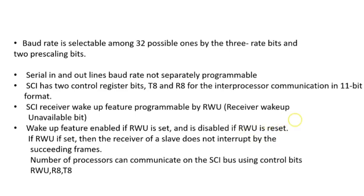The baud rate in SCI is selectable among 32 possible values using three baud rate bits and two pre-scaling bits. The serial in and out lines are not separately programmable — they are programmed together for the baud rate. SCI has two control register bits, T8 and R8, used for inter-processor communication.